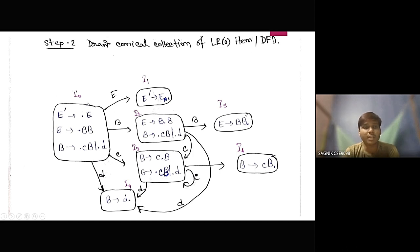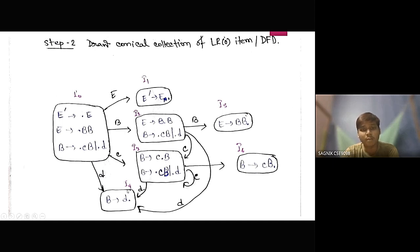So after that we have numbered the states: this is I0, the initial state; I1, the first final state; I2, the intermediary state; I3, also an intermediary state; I4, the final state; I5, also a final state; and I6 is also a final state.